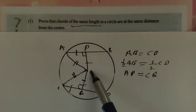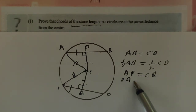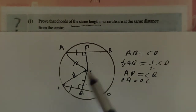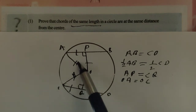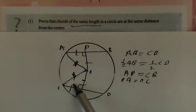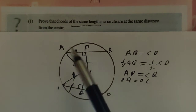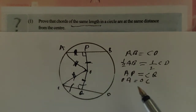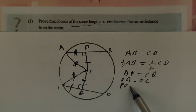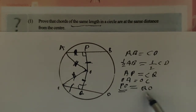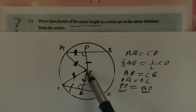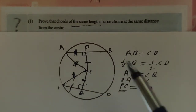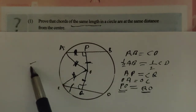Since both are radii of the same circle, OA equals OC. So in these two right triangles, the hypotenuse are equal and one small side is equal. Therefore by the Pythagorean theorem, the third side is also equal. That gives us PO equals QO. PO and QO are the perpendicular distances from the center to each chord. Therefore the theorem is proven: both sides of the theorem are established.